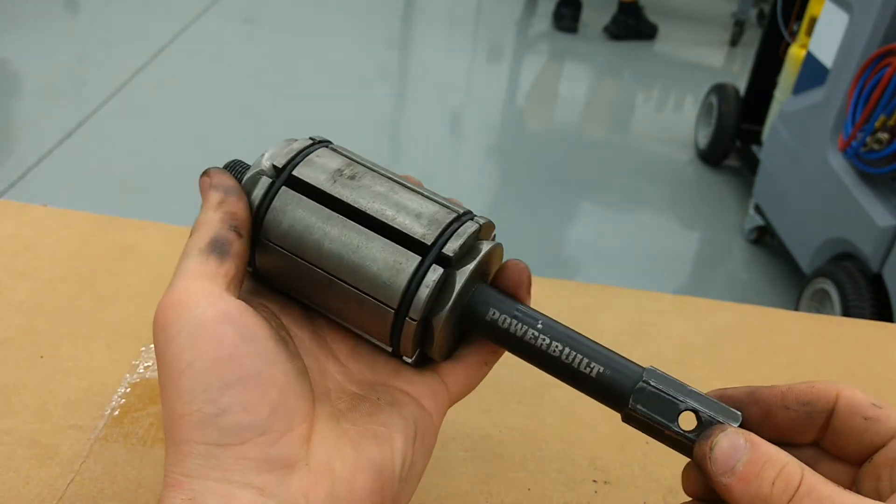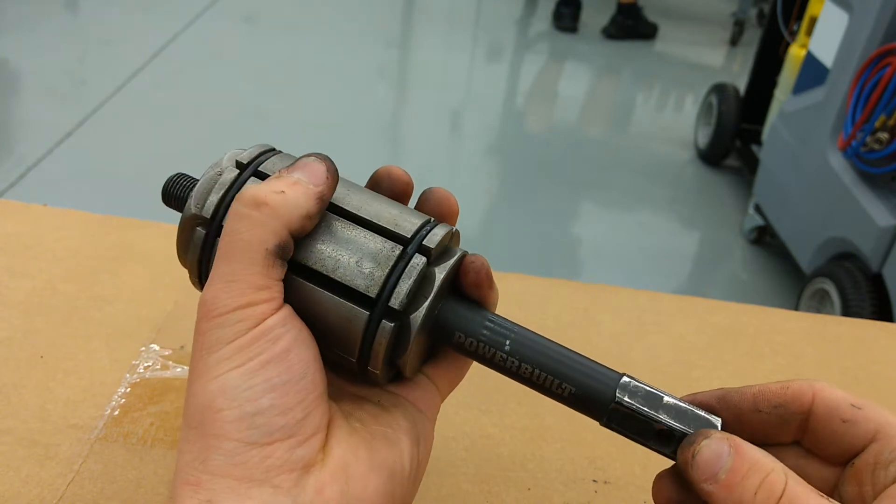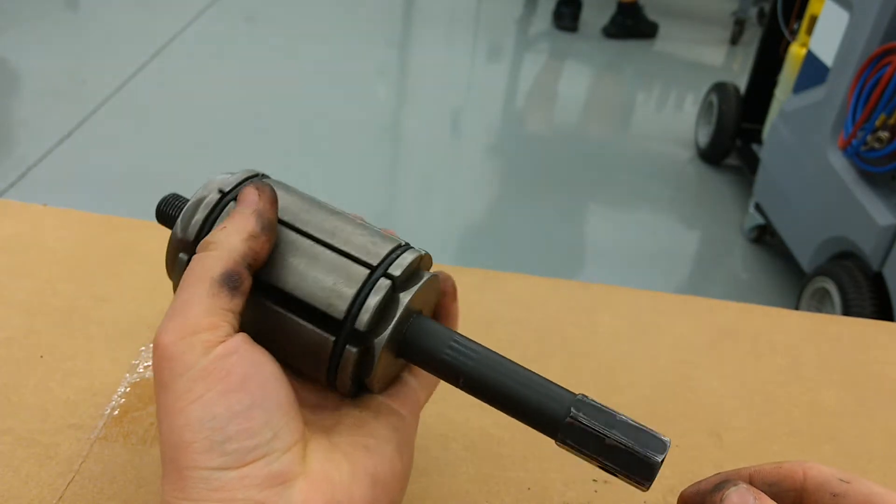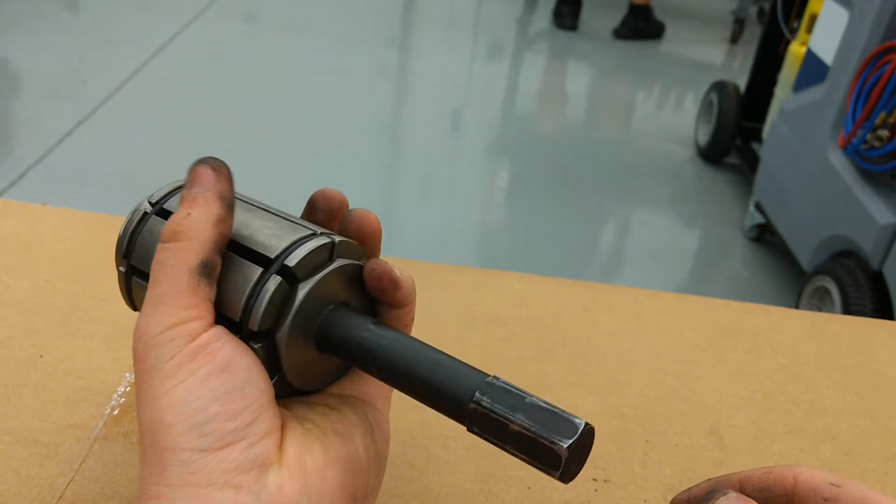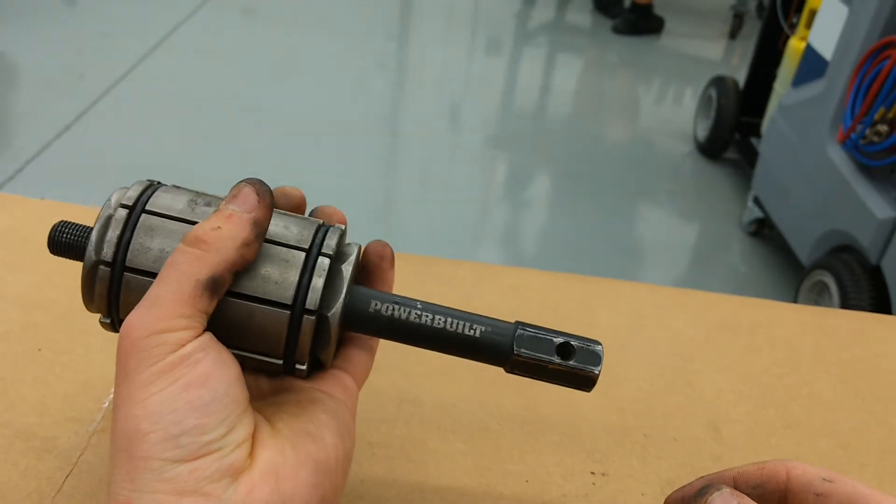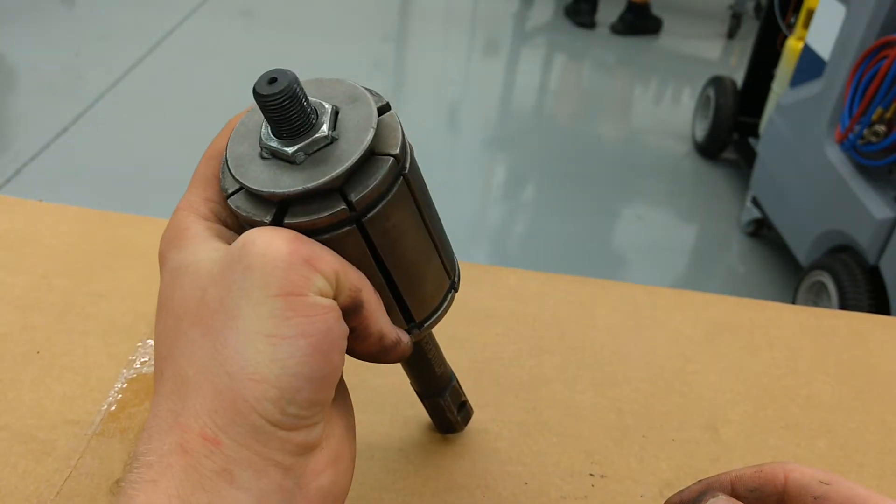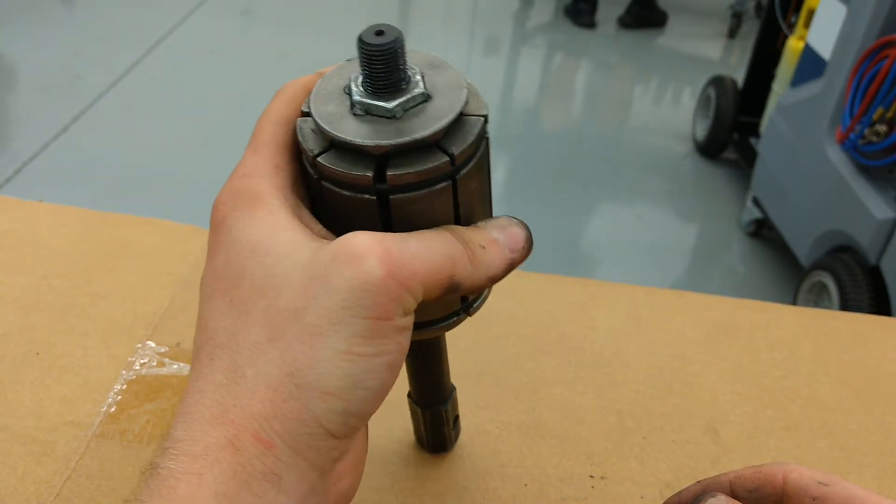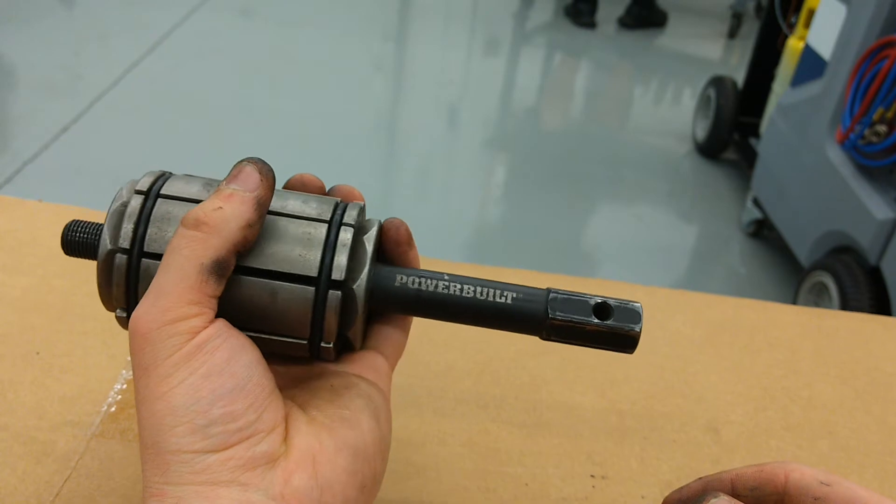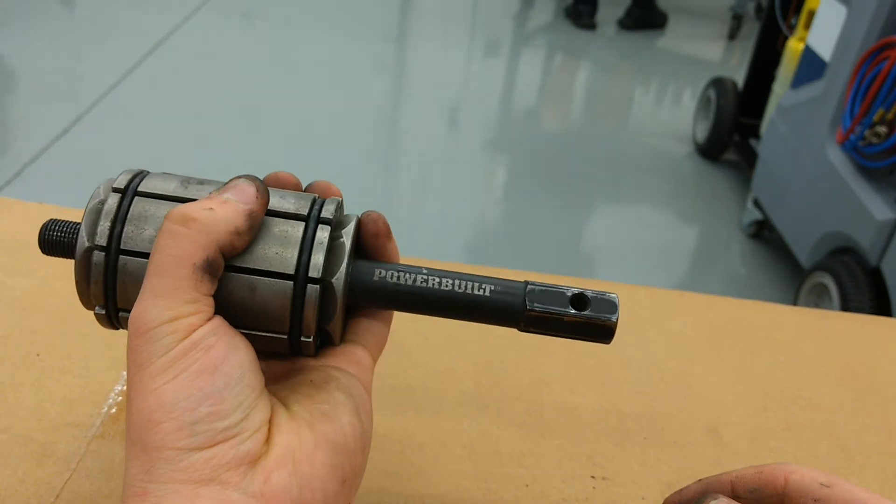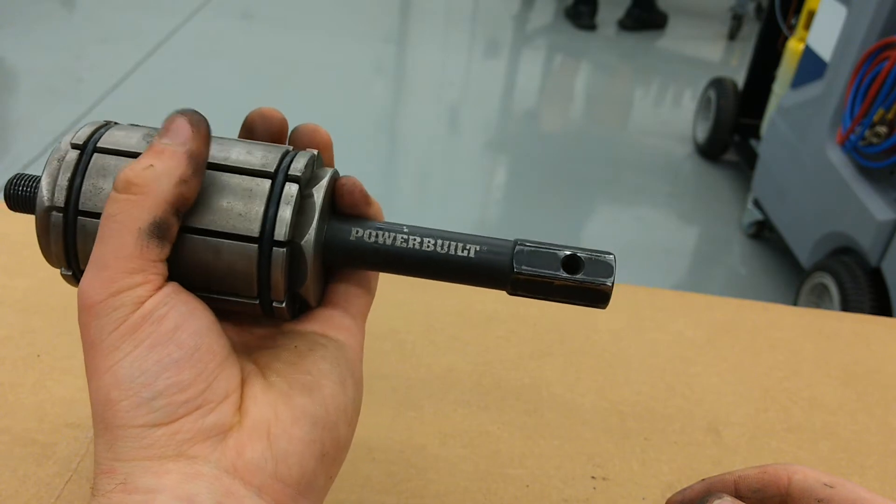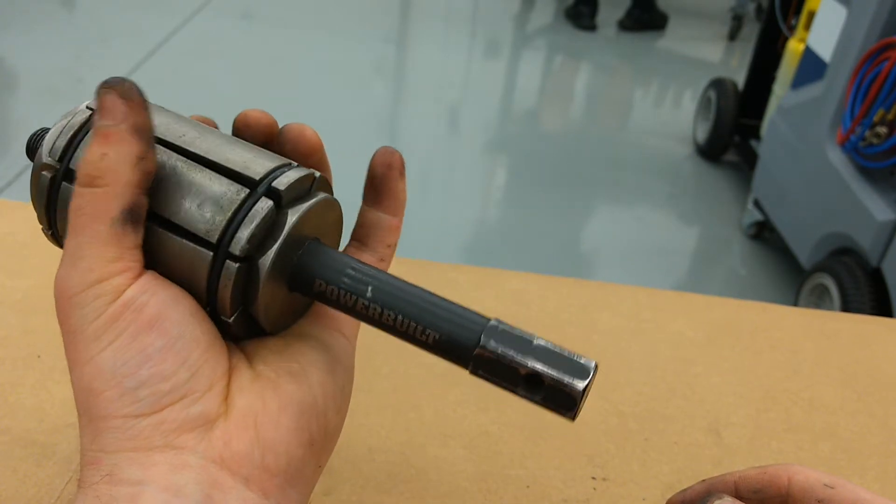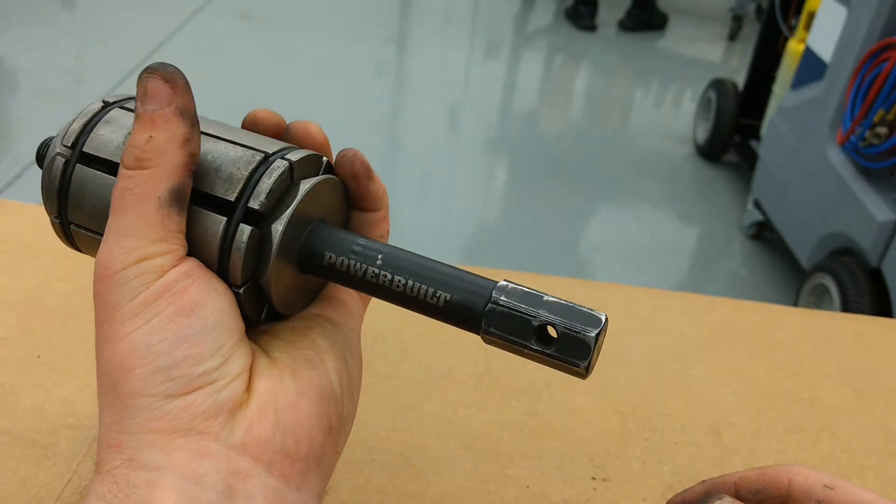The nice thing about Advanced Auto Parts is they've got something called the loaner tool program, which basically means there are certain tools, if you buy them full price and then use them and return them to the store in a few days, as long as you don't damage the tool, they'll give you all your money back. Basically like taking a tool out from the library.